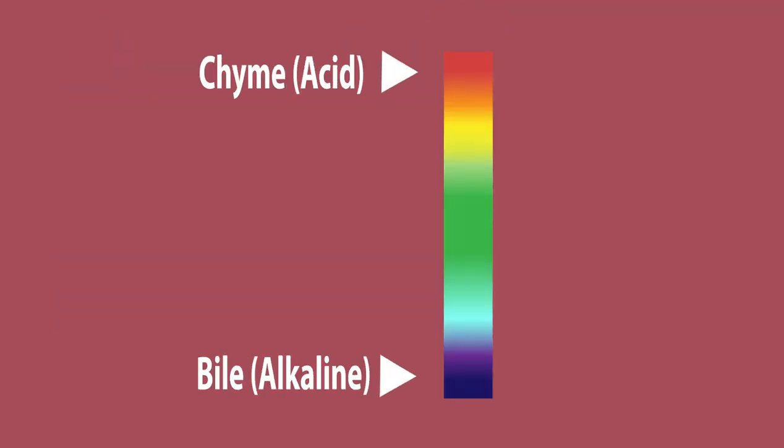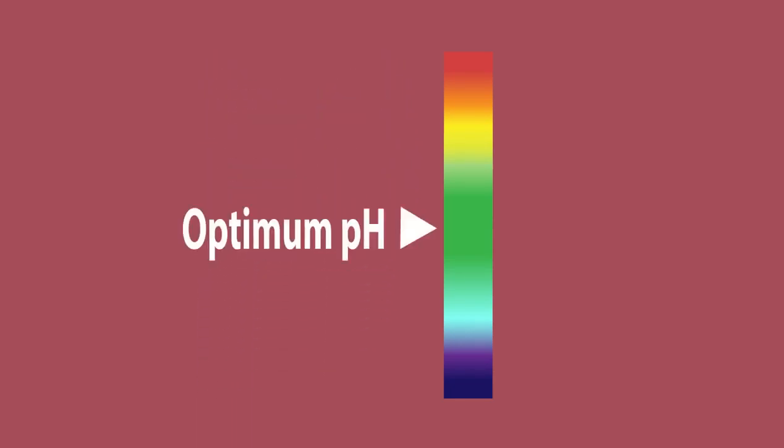It's alkaline. This helps to neutralize the strong hydrochloric acid which is added to the chyme and provides a more optimum pH for enzymes in the small intestine to work in. To end with a random fact: the bile is green in color and it's this that makes your poop brown.